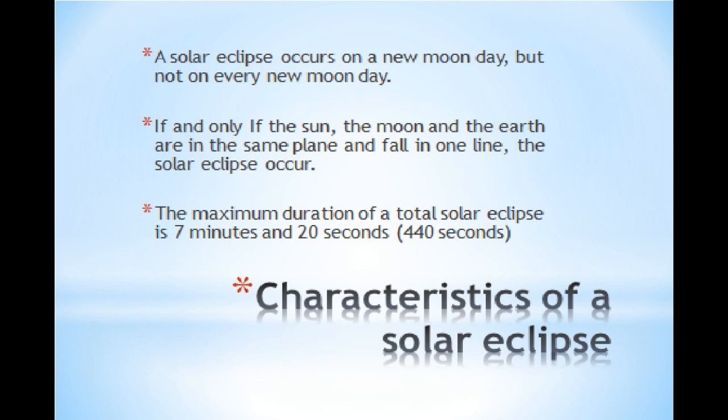Let us learn the characteristics or the features of solar eclipse. The first thing is that a solar eclipse occurs on a new moon day, but not on every new moon day. If and only if the sun, the moon and the earth are on the same plane and fall on the same line, the solar eclipse occur. The maximum duration of a total solar eclipse is 7 minutes and 20 seconds, that is 440 seconds.